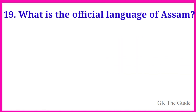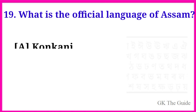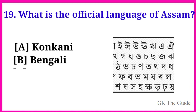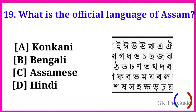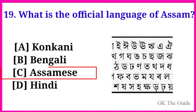Question 19: What is the official language of Assam? Option C. Assamese is the correct answer.